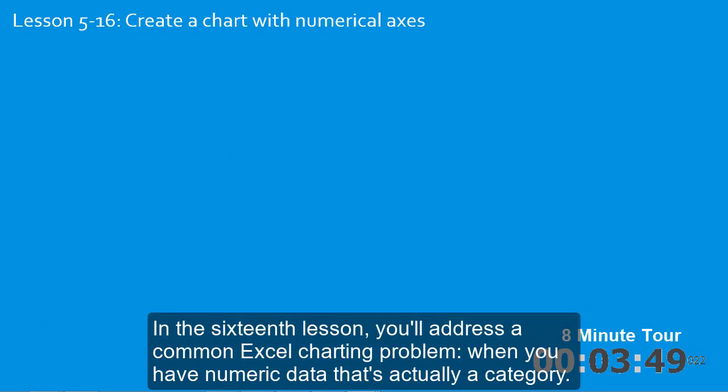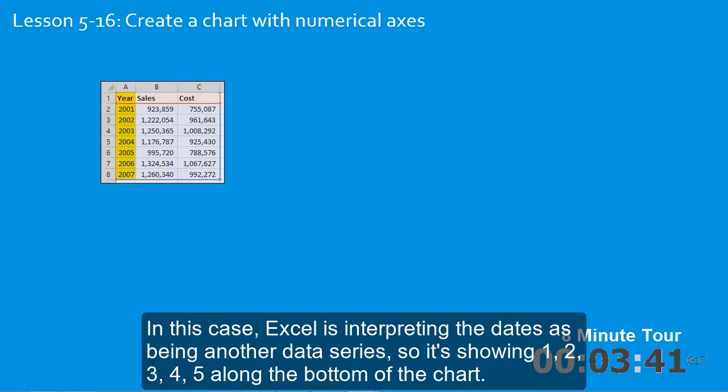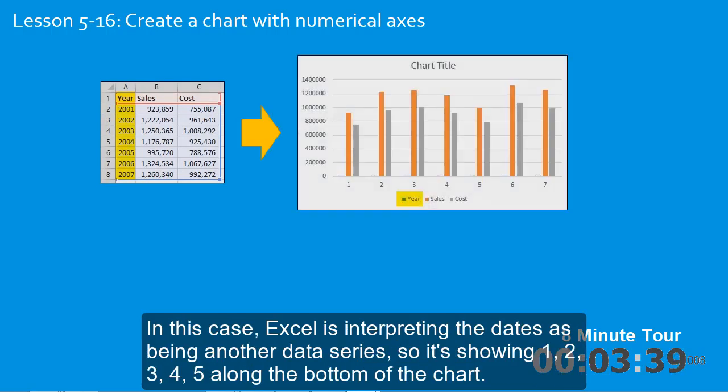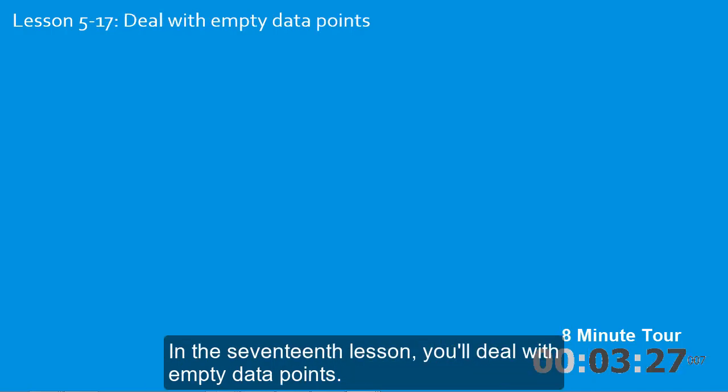In the sixteenth lesson you'll address a common Excel charting problem when you have numeric data that's actually a category. In this case Excel is interpreting the dates as being another data series, so it's showing 1, 2, 3, 4, 5 along the bottom of the chart. You'll learn how to tell Excel that this is actually a category to chart the dates correctly.